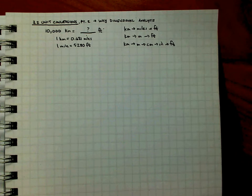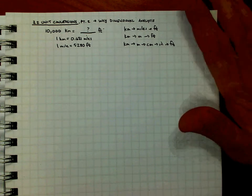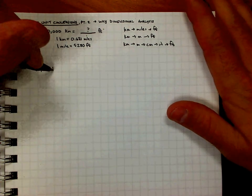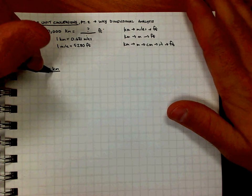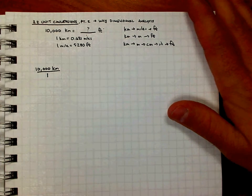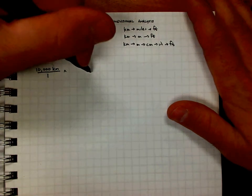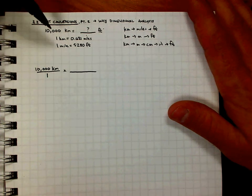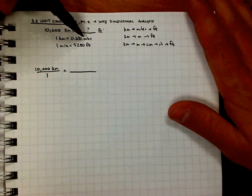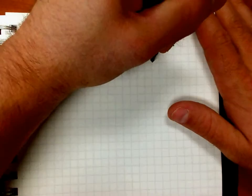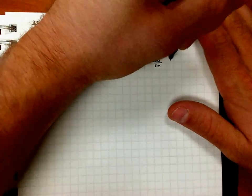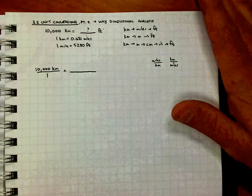So we're going to start off just like we did in the last video. We're going to start off by writing out what we know, and we're going to write it as a fraction. So I'm going to start off by saying I have 10,000 kilometers. And even though it seems silly right now, we're going to write it as a fraction over 1. I'm going to multiply that by a next fraction. This is going to be a unit conversion. And in this case, let's convert kilometers to miles. Now I have two options here. I can write miles over kilometers, or I can write kilometers over miles. One of those is correct, and one of those is incorrect.